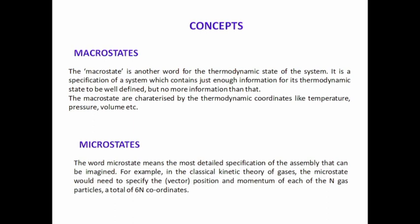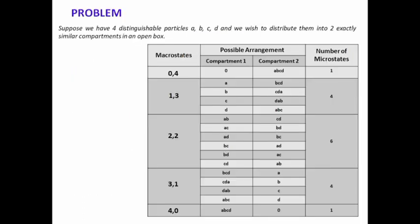For n gas particles, we require six n coordinates to specify the vector position and momentum. This is called the phase space of a system. Now, to understand microstate and macrostate more clearly, I will discuss one problem. Suppose we have four distinguishable particles — a, b, c, d — and we wish to distribute them into two exactly similar compartments in an open box.